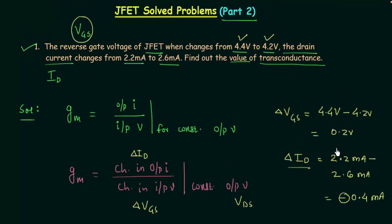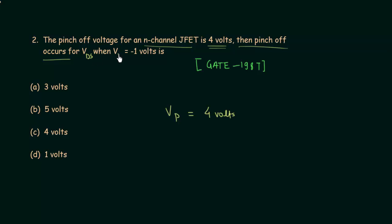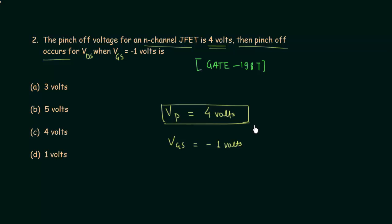Now we will solve problem number 2, which is a conceptual problem requiring no mathematical calculations. If you know how a JFET works, you can easily find the correct option. The pinch-off voltage for an n-channel JFET is equal to 4 volts, meaning Vp equals 4 volts. Pinch-off occurs for a certain value of VDS when Vgs equals minus 1 volt. The maximum drain current IDSS is also given.